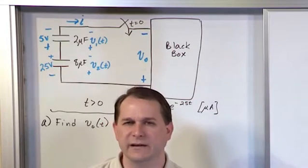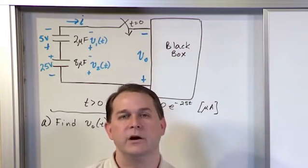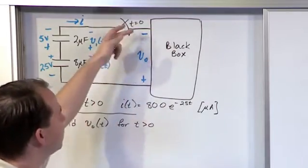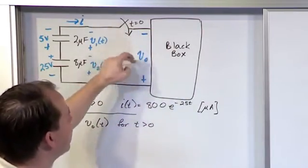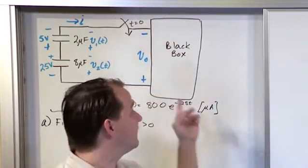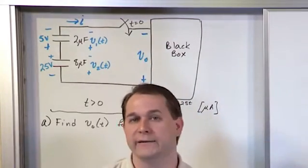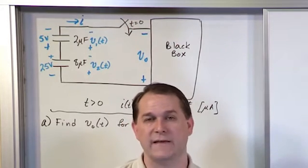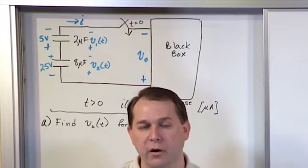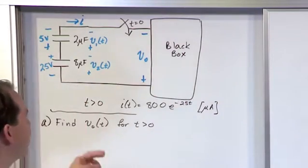But you have to make some assumption. In this drawing, whoever's giving you this problem has made an assumption - they're saying V0, the voltage across this black box, is oriented like this. You may get a positive answer for V0, which means the orientation you drew was correct. You might get a negative answer, which just means the orientation for V0 was actually backwards from what you had drawn.